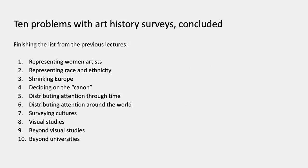Just to recap the series of lectures — this is the fourth and last in a series of four lectures on ways of rewriting the Art History Survey. The first one was on women artists and race and ethnicity. The second was on shrinking Europe and deciding on what counts as a canon. The previous one was on distributing attention through time and through the world in some way that would be fair and equitable. And this one completes the list of ten problems that people have thought about in relation to the survey.